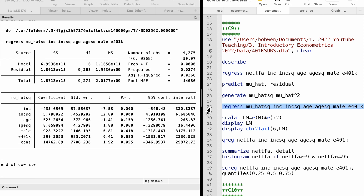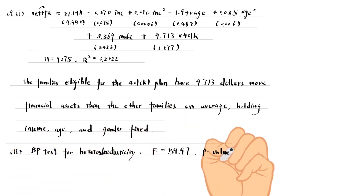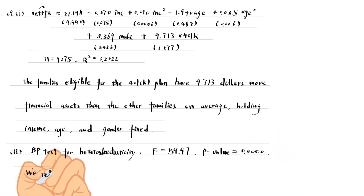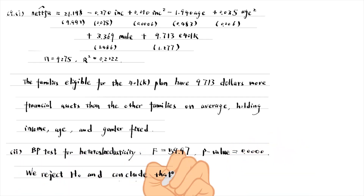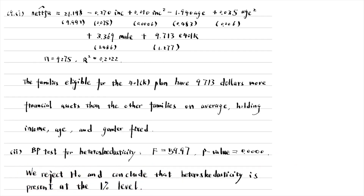The null hypothesis is that the coefficients on all explanatory variables are zero. The F statistic is 59.97 and its p-value is 0 to 4 decimal places. The LM statistic is also large. We reject the null hypothesis and conclude that heteroscedasticity is present at the 1% level. In other words, the error term is not independent of the explanatory variables.